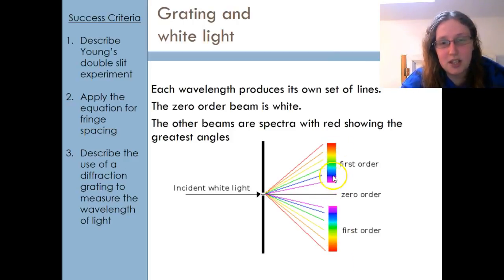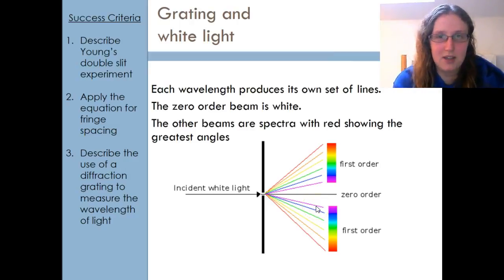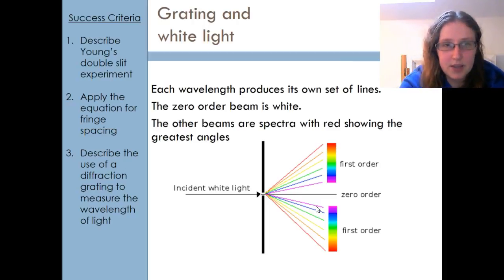My zero order beam will still be white because all the beams travel straight through. Right in the middle, I've got a nice little patch of pure white light. But on either side, what I'm going to see is a rainbow with the blue-purple end towards the middle and the red end further away. That's because the angle depends on the wavelength. As my wavelength changes, so does my angle. This leads to me having this very pretty rainbow pattern on either side of my single beam of white light.